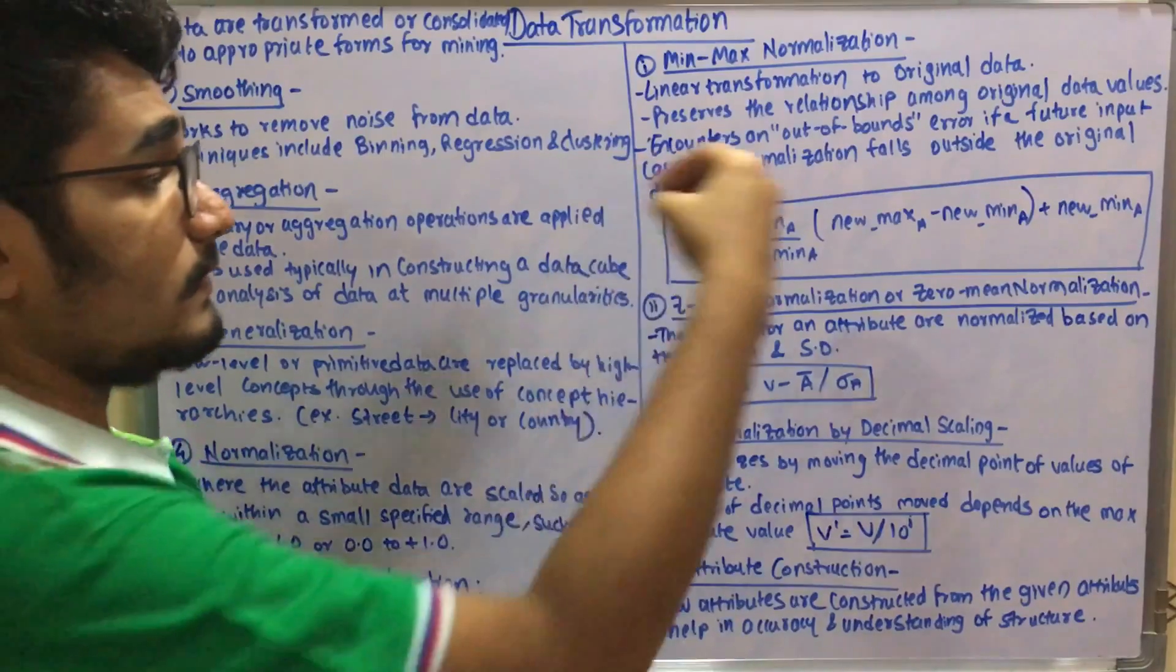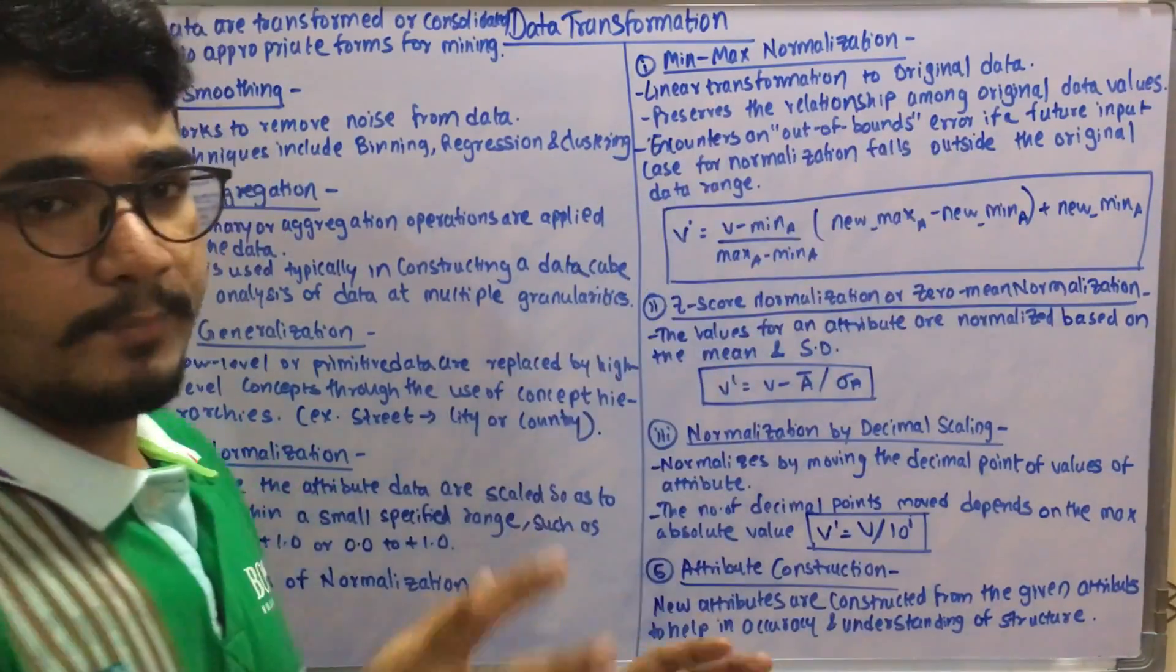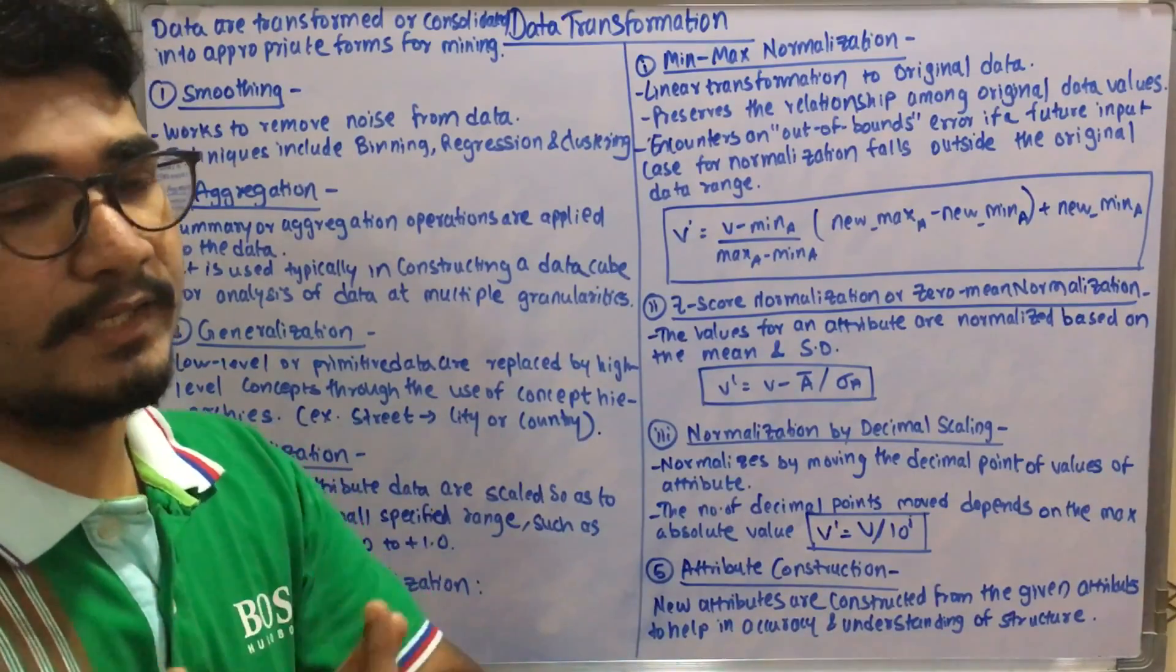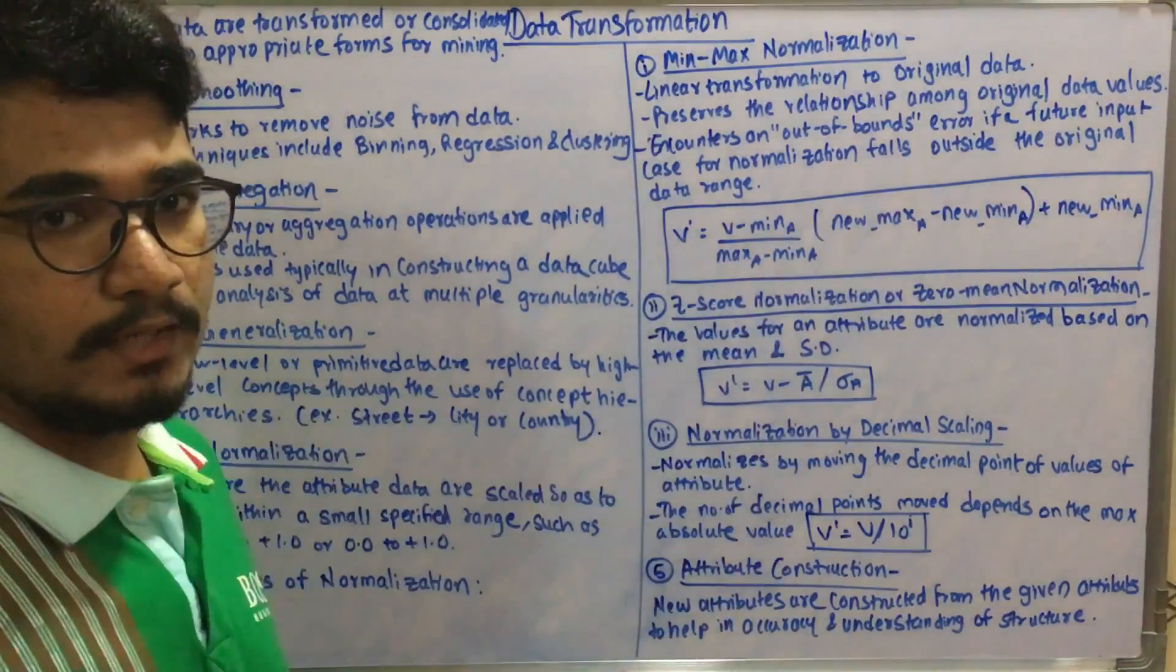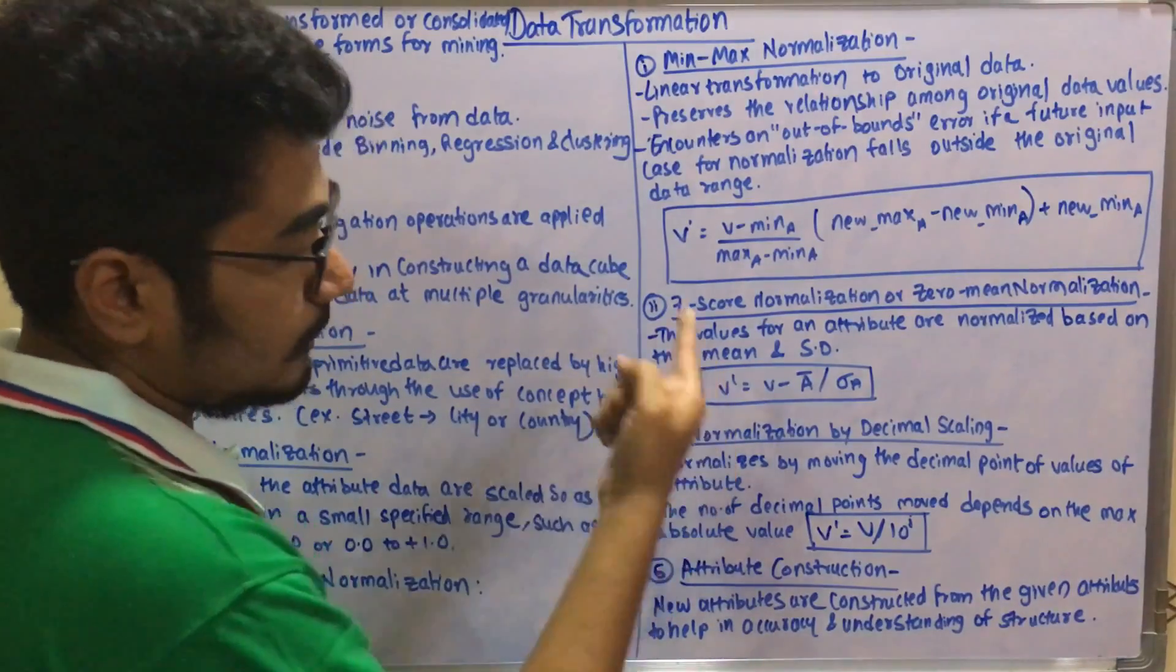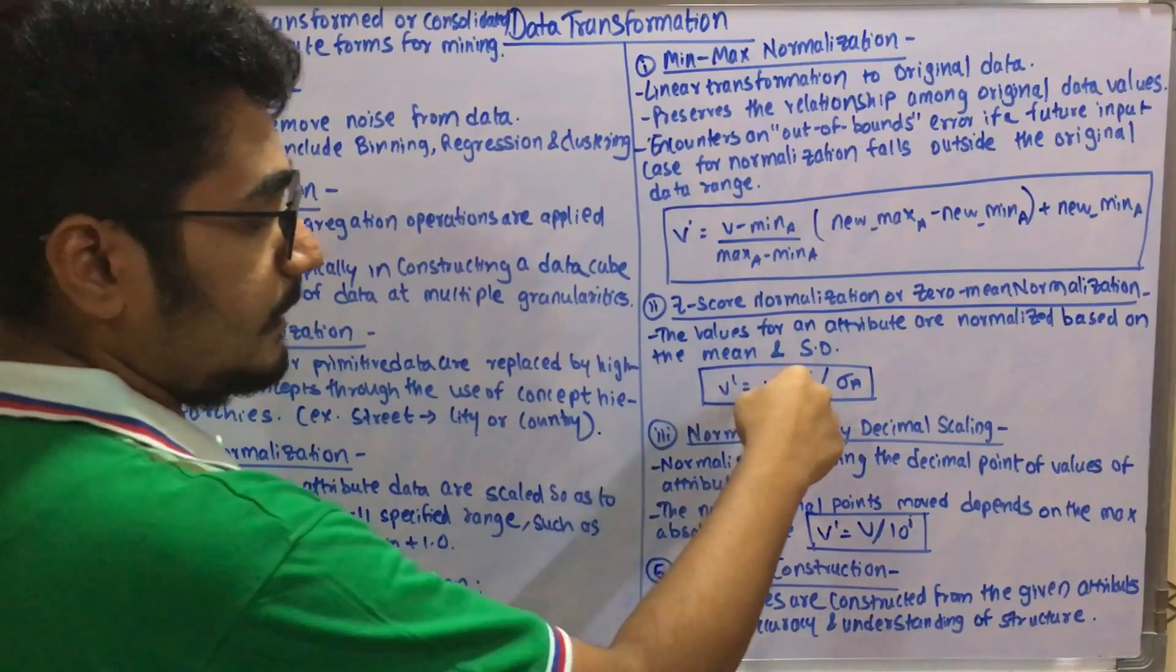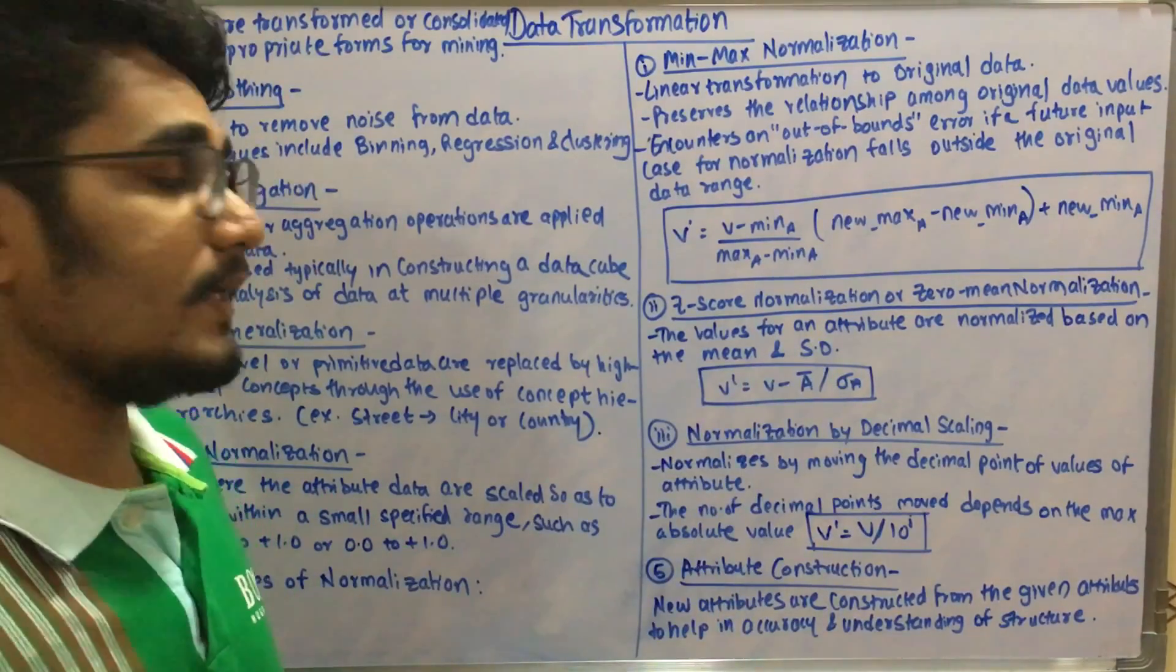Next you have the z-score normalization or zero mean normalization. In this you have basically two values: mean and standard deviation. The formula goes as V dash equals V minus A bar, that is the mean, divided by standard deviation of A.